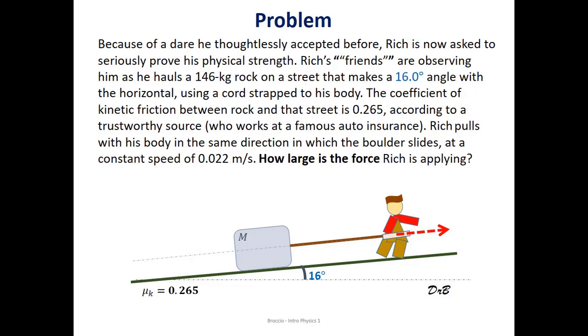The coefficient of kinetic friction between the rock and the street is 0.265 according to a trustworthy source. Rich pulls with his body in the same direction in which the boulder slides at a constant speed of 0.022 meters per second. How large is the force that Rich is applying?